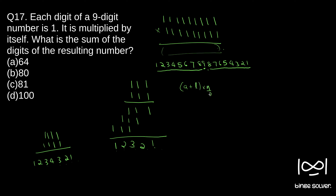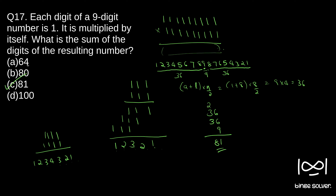For 1 to 8: (1 + 8) × 8/2 = 9 × 4 = 36. So the sum of 1 to 8 is 36. The total is 36 plus 9 plus 36, which equals 81. So the solution to question 17 is C: 81.